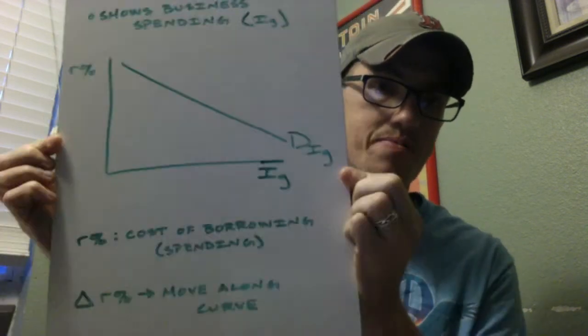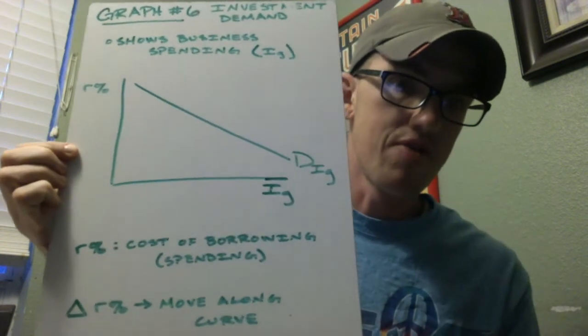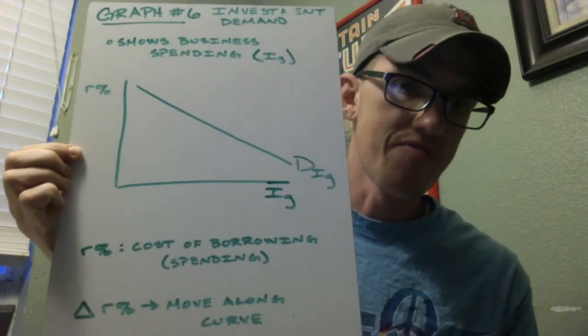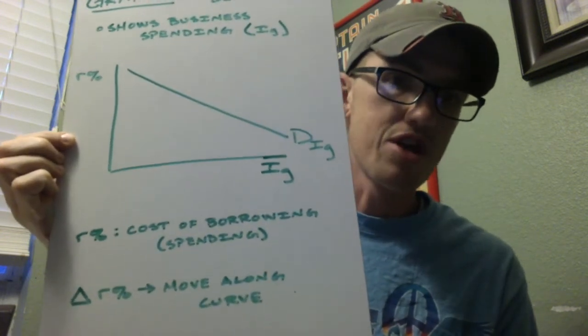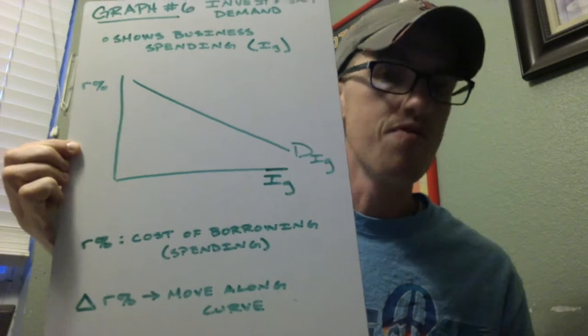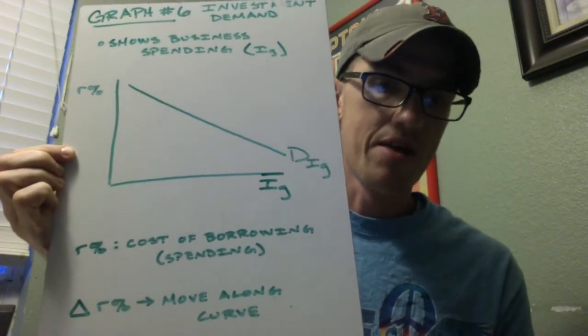So now keep in mind, again, R, the real interest rate, is the cost of borrowing or the spending that businesses will do. And if you're changing interest rates, you're just going to move along the line. And that's the graph. Keep it simple.